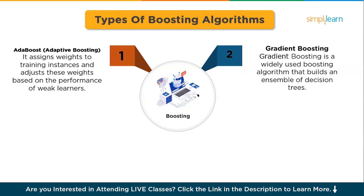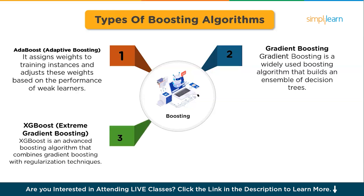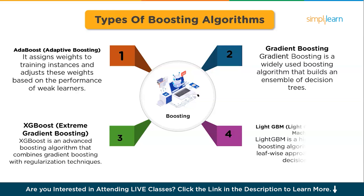The second type is Gradient Boosting, a widely used algorithm that builds an ensemble of decision trees. The third is XGBoost — Extreme Gradient Boosting — an advanced algorithm that combines gradient boosting with regularization techniques. The fourth is LightGBM, or Light Gradient Boosting Machine, a high-performance boosting algorithm that uses a leaf-wise approach to construct decision trees.